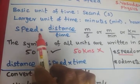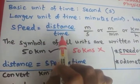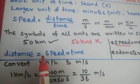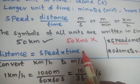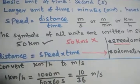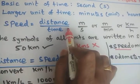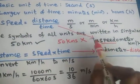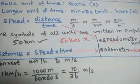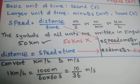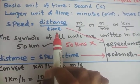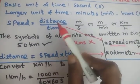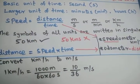Speed is equal to distance divided by time, and distance is equal to speed multiplied by time. The formula distance equals speed into time is used in the odometer, while speed equals distance divided by time is used in the speedometer. By using these two formulas, speedometers and odometers calculate the speed and distance covered by the vehicle.